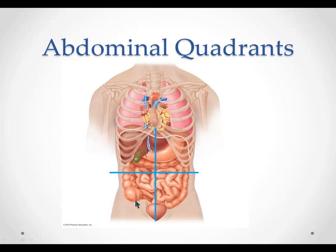So the abdominal quadrants are good for localizing pain or asking for specific imaging to be done in a specific portion of the abdomen. It just helps us better characterize where a patient might be having difficulty, surgery, or any other intervention that might involve the abdominal region. So we have the R-U-Q, the L-U-Q, the L-L-Q, and the R-L-Q.